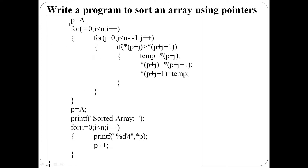Next step is sorting using bubble sort. Two for loops are used. First for loop: i equal to 0, i less than n, i plus plus. Second for loop: j equal to 0, j less than n minus i minus 1, j plus plus. Then the jth and j plus 1th elements are compared. If star p plus j is greater than star p plus j plus 1, the jth element is the largest, so swap using a variable temp. temp gets the jth element, jth location gets j plus 1, and j plus 1 gets temp. This process continues.